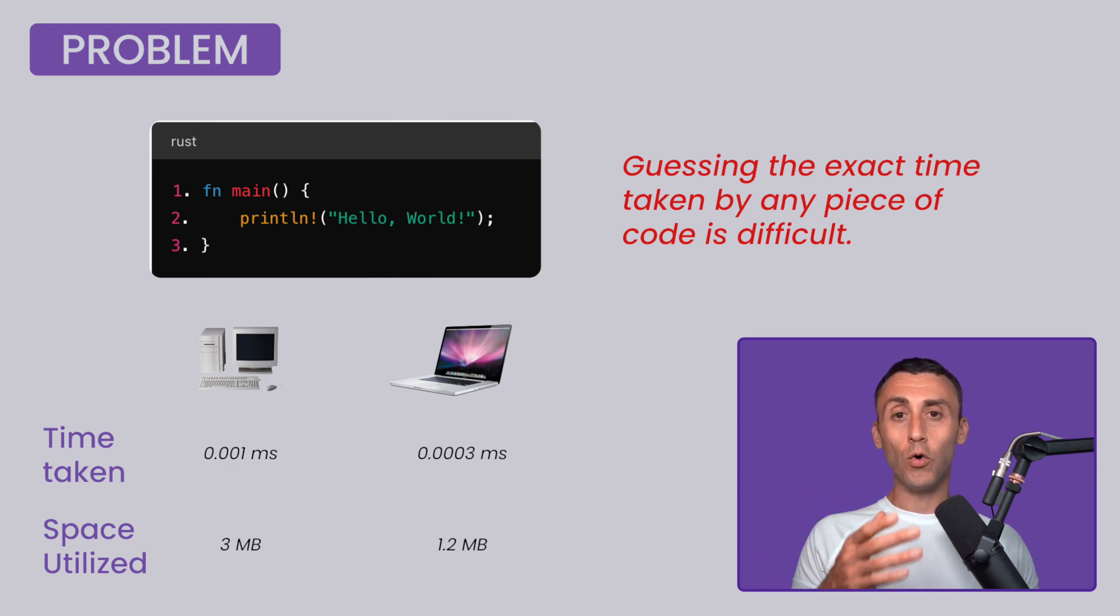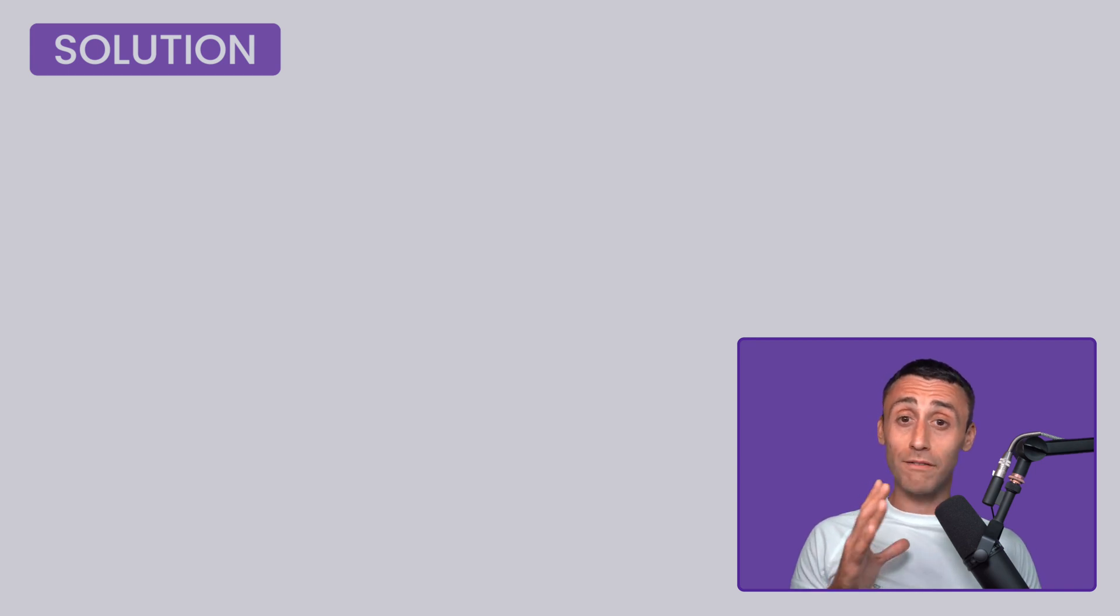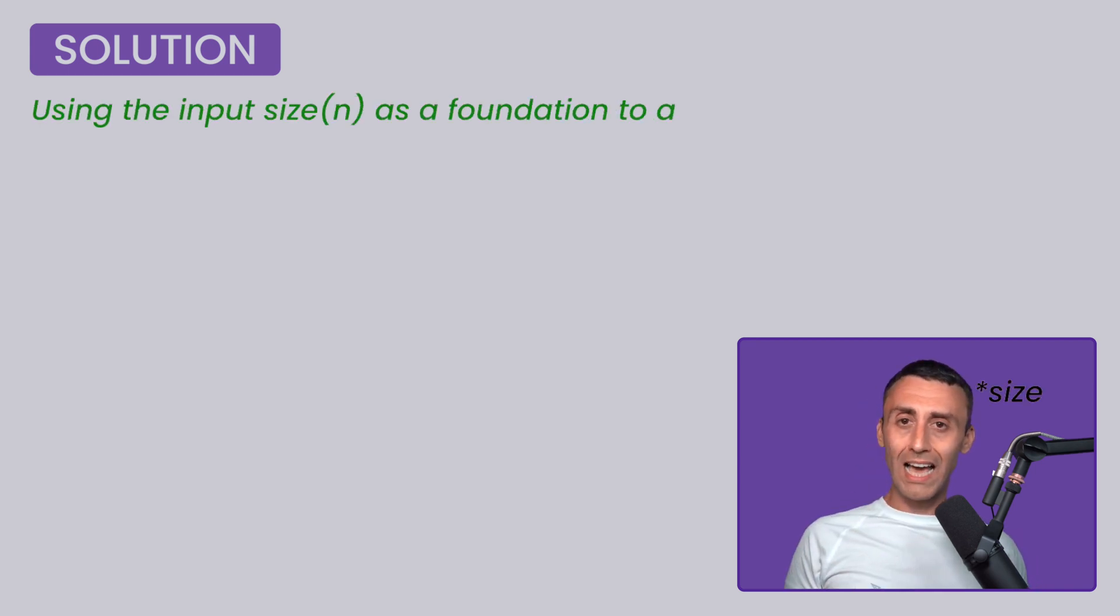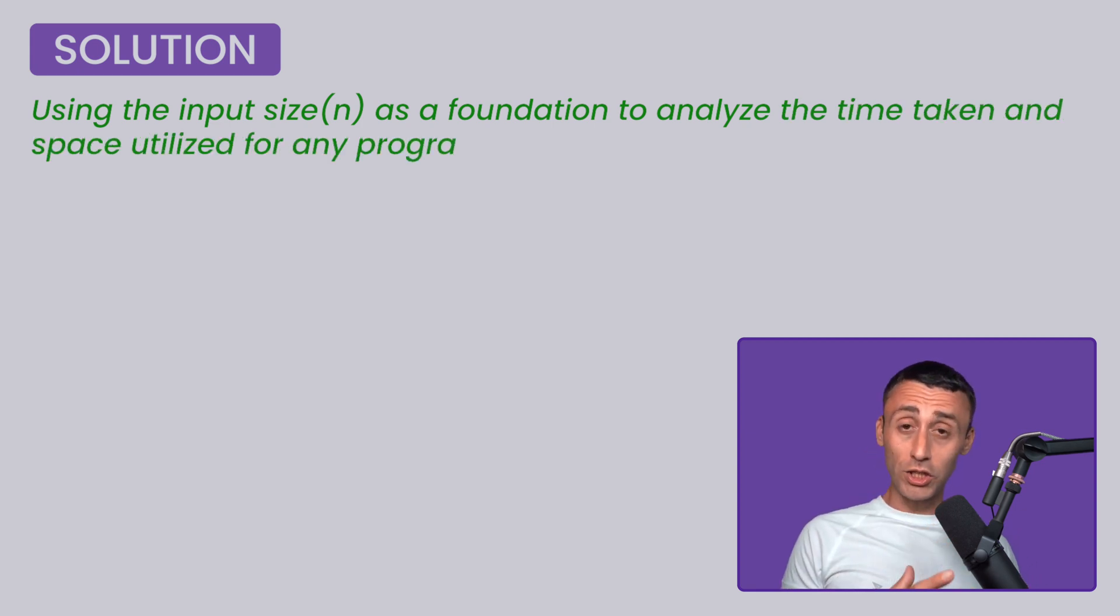I hope you understand the problem here. Guessing the exact time taken by any piece of code is difficult. As a programmer, you know the same code can be deployed and executed on different machines, based on the scenario. But as you know, developers are smart. They figured out a very interesting solution to this problem, which is, we use the size of the input as a foundation to analyze the time and space utilization.